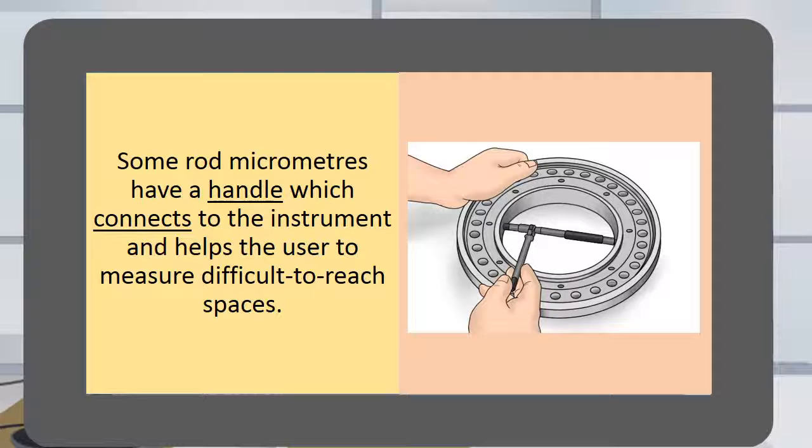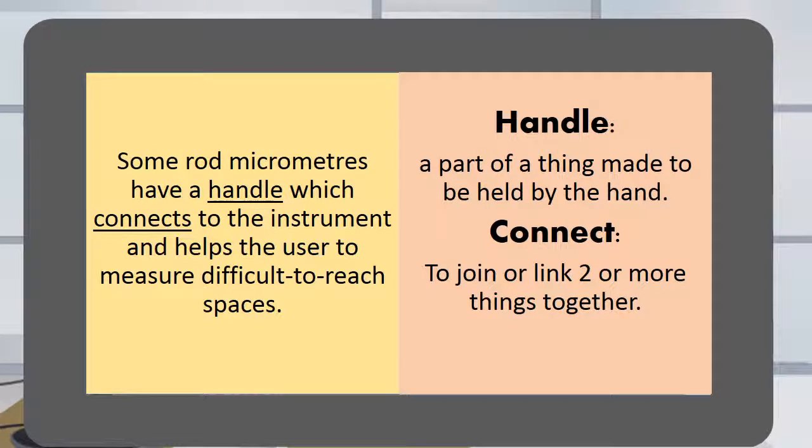Some rod micrometers have a handle which connects to the instrument and helps the user to measure difficult to reach spaces. Handle is a part of a thing made to be held by the hand. Connect is to join or link two or more things together.